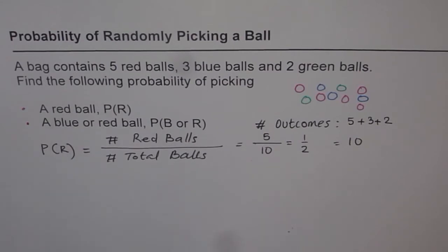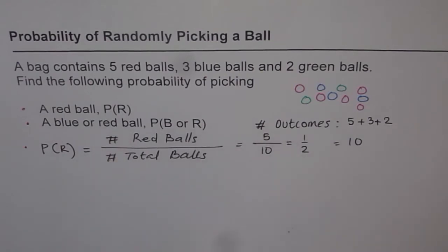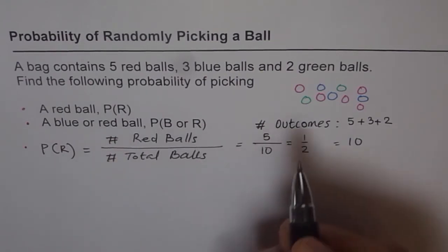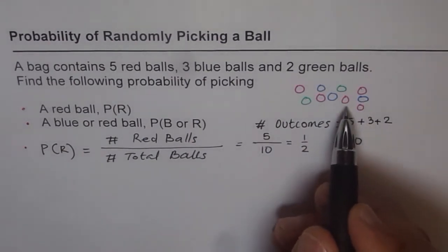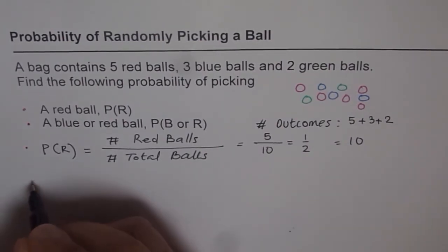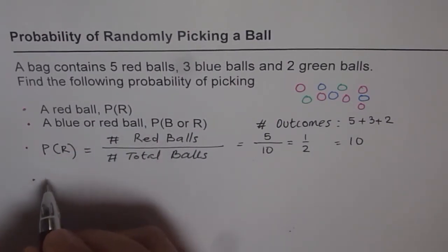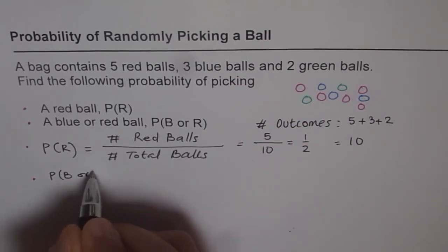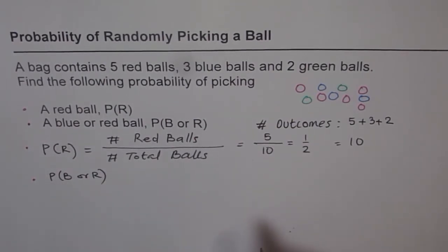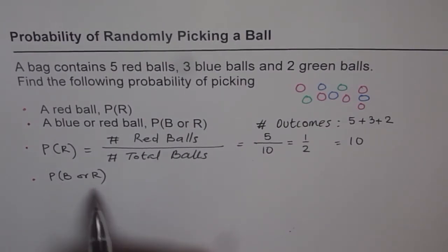Now let's look at the next question. The next question is: what is the probability of picking a blue ball or a red ball? That means we have a choice — you could pick either a blue ball or a red ball. So there are two things you could pick from, meaning not green. Your chances of picking have improved — it's much more.